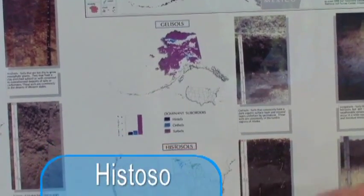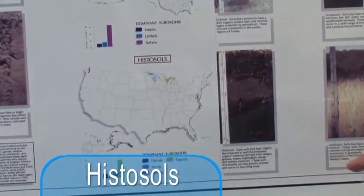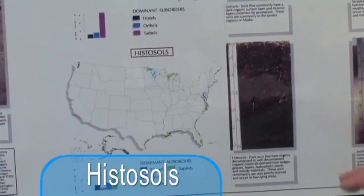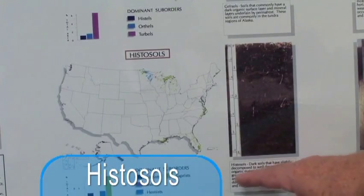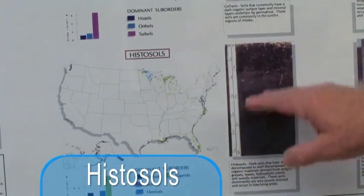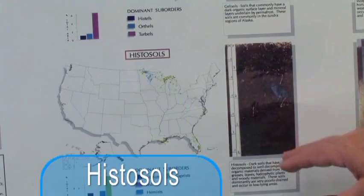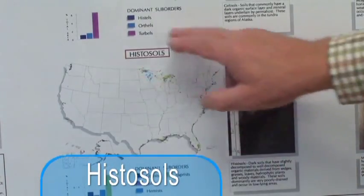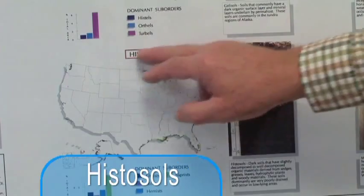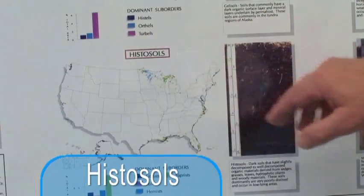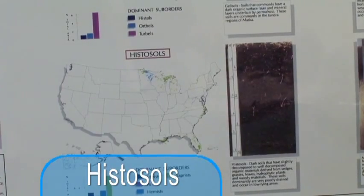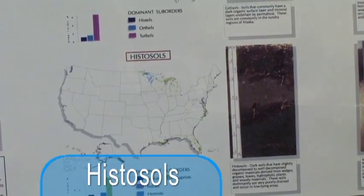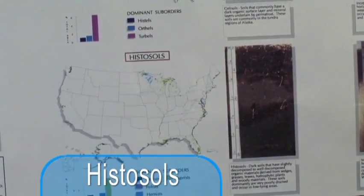The histosols would represent the soils that are relatively dark, somewhat decomposed, but these are high organic matter soils. You can note that that's characteristic of northern Minnesota, Wisconsin, and Michigan — the areas where we have peat and bog soils.